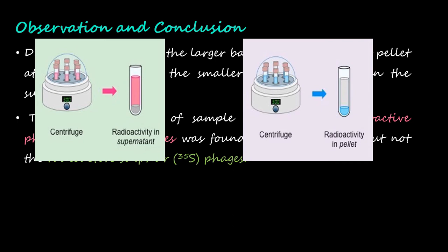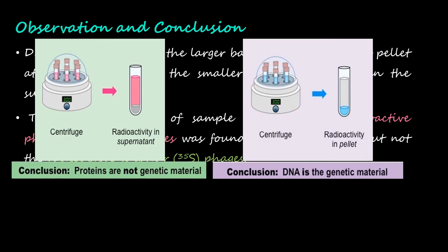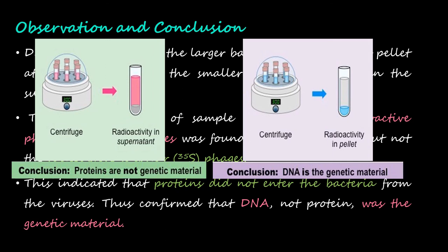After centrifugation, the radioactivity is observed in the supernatant because the protein was radiolabeled, while in the second case after centrifugation we see radioactivity in pellet because the DNA was radiolabeled. Conclusion is that proteins are not the genetic material and DNA is the genetic material. This indicated that proteins did not enter the bacteria from the viruses, thus confirmed that DNA, not protein, was the genetic material.